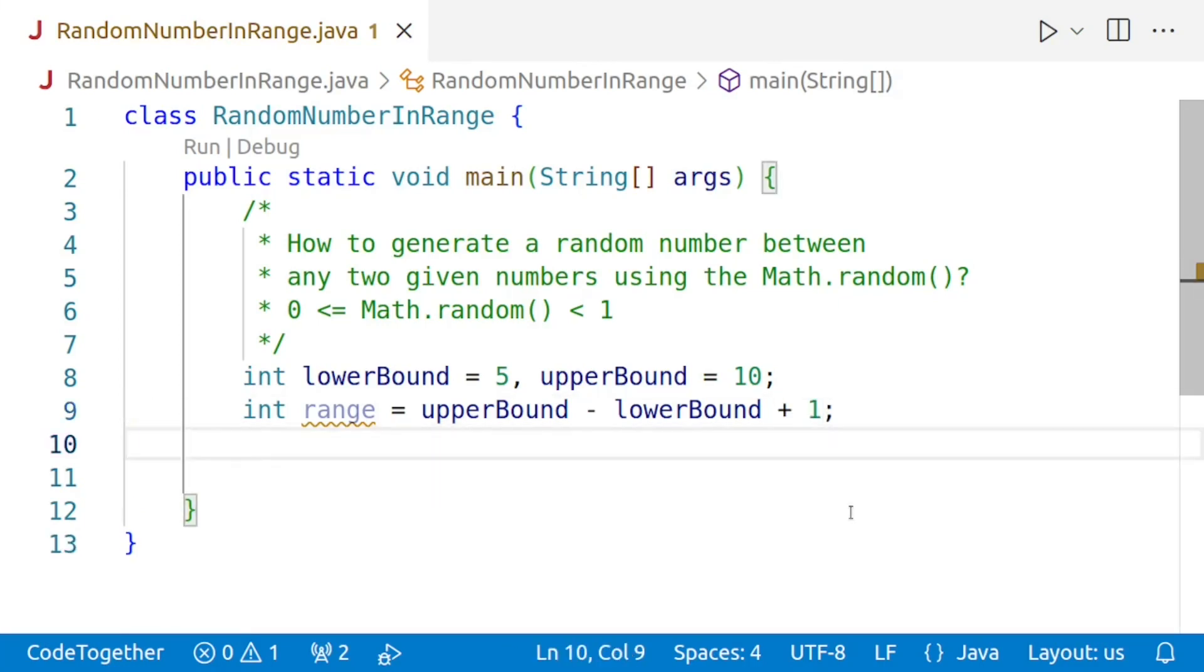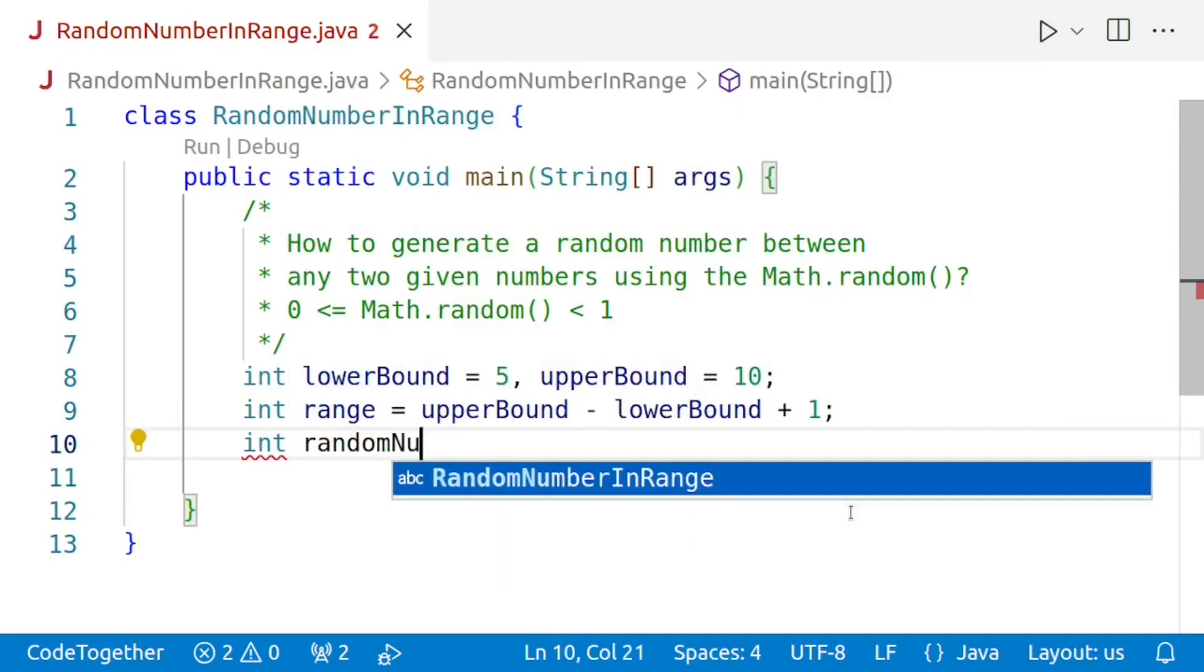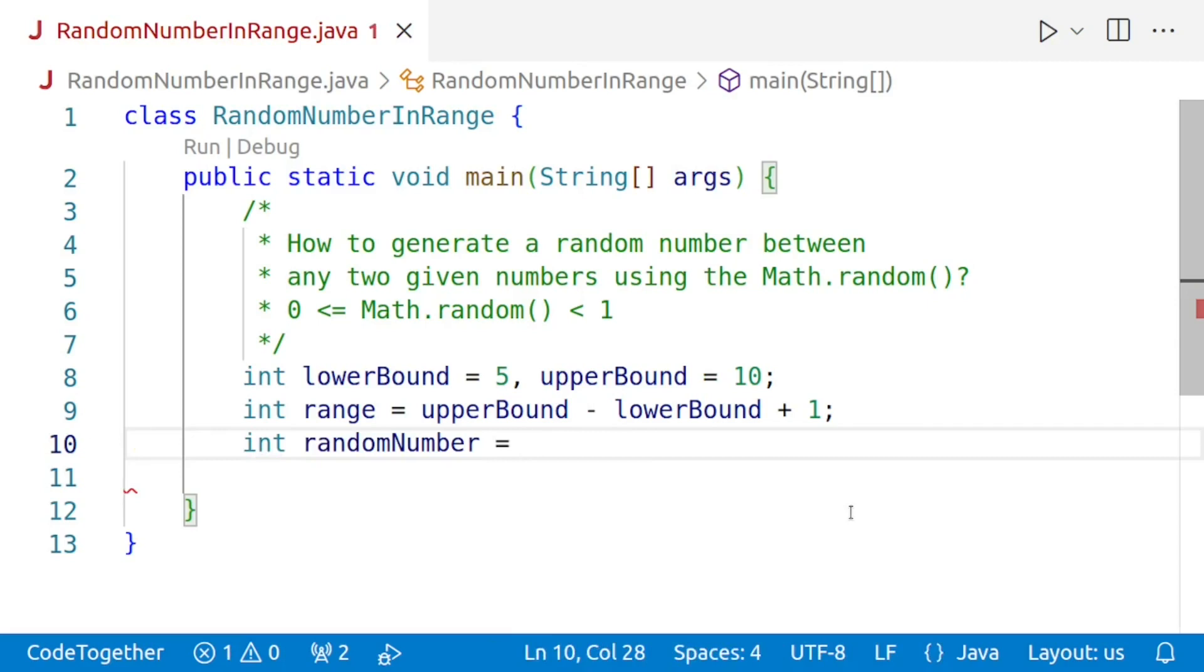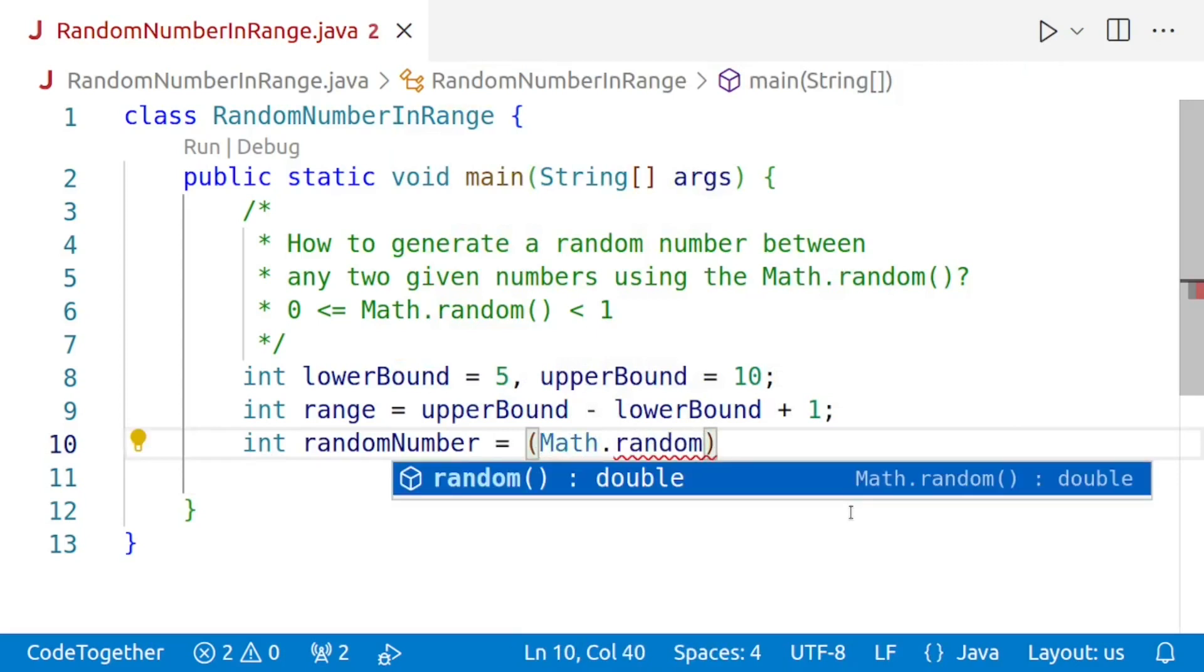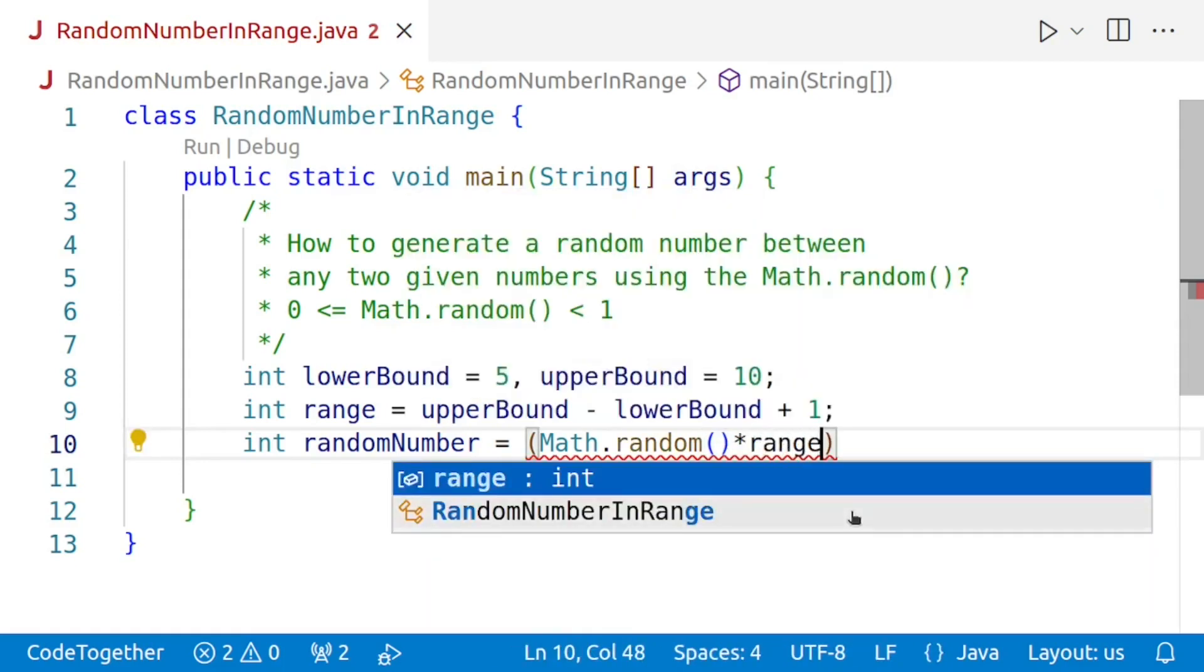Now, let us do the most important part of this question. We'll say int random number is equal to, our first step is, we'll say Math.random. Now, this is going to give us a number between 0 and 1. Note, it will not give 1. And then, we'll multiply it by our range. So, we'll say into range.